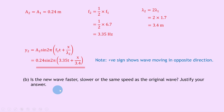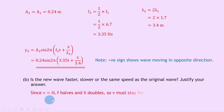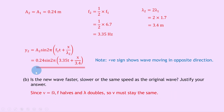Part b asks: is the new wave faster, slower, or the same speed as the original wave? Since v equals f lambda, the frequency halves and the wavelength doubles, so v must stay the same. Halving f while doubling lambda gives the same speed value, so v stays constant.